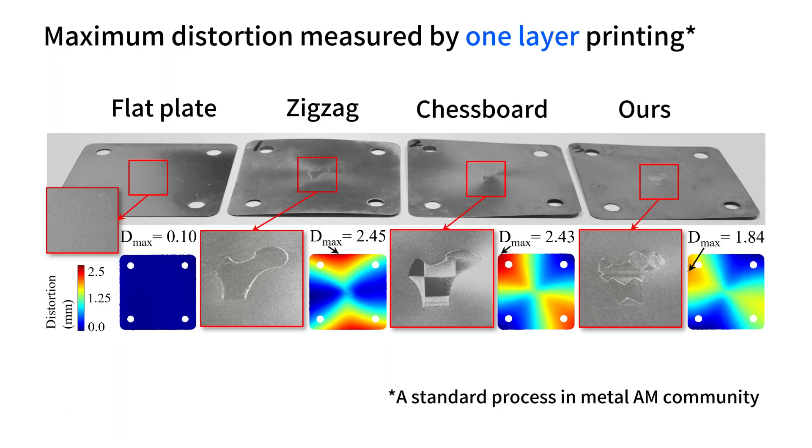After printing one layer of the femur model on the flat plate, the distortion is measured after cooling down. As it can be observed, the maximum distortion caused by the zigzag toolpath and the chessboard toolpath are more than 30% of ours.